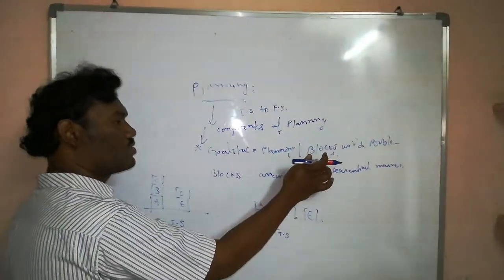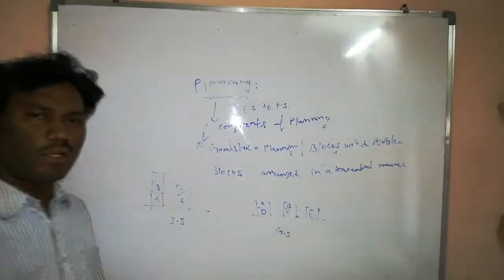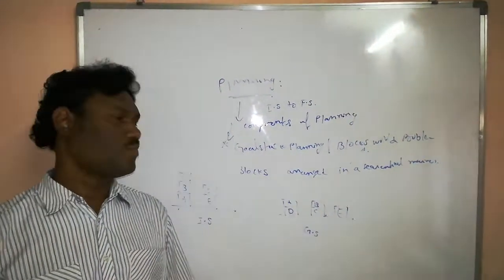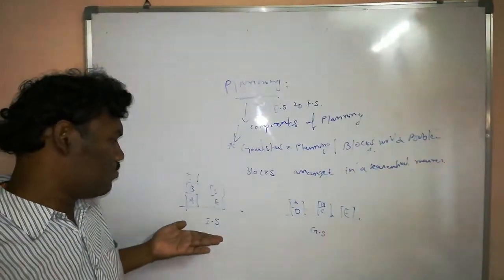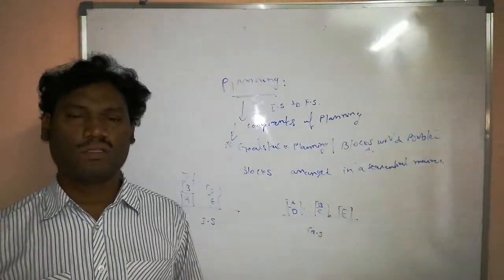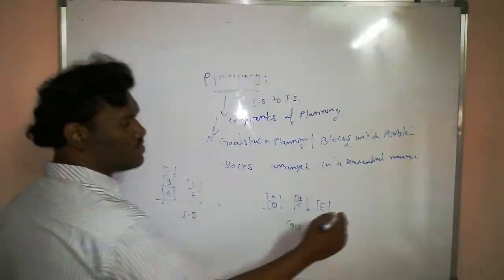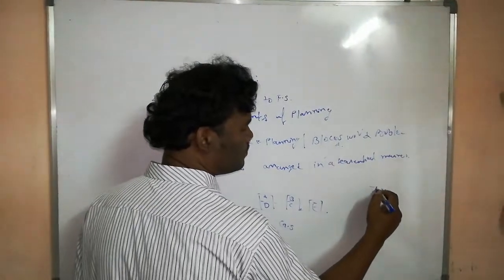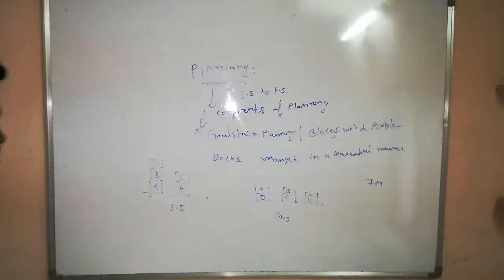That can be referred as blocks world problem or the goal stack planning. In the example interview, they are giving both the initial step and goal step. Then how we can write it and how we can justify for the 7 marks question.